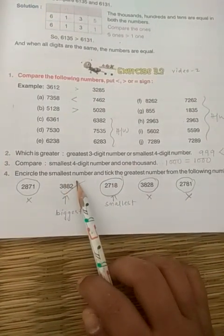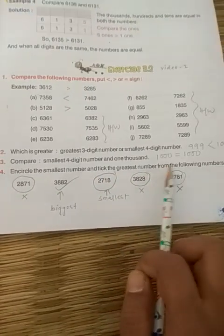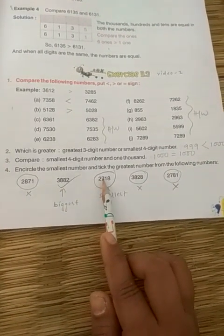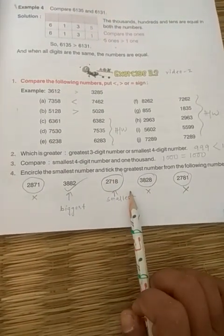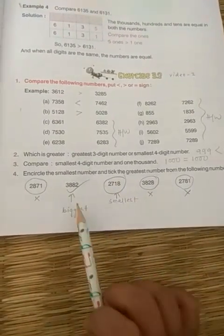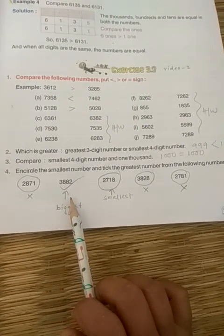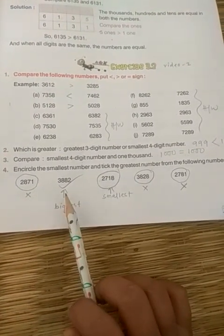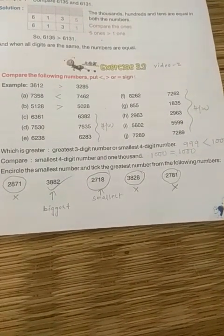Next, circle the smallest number and find the greatest number from the following. Here, 2718 is the smallest number and 3818 is the greatest or biggest number. Children, learn all the questions and answers. Thank you.